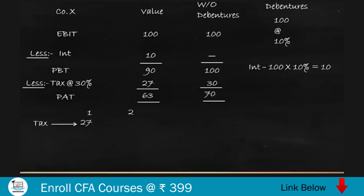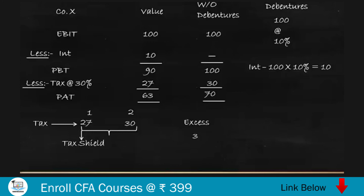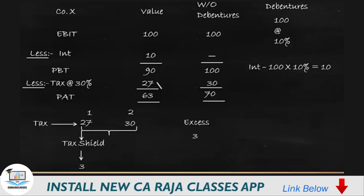In Scenario 2, the profit after tax is 70 and the tax paid is 30. Comparing Scenario 1 and Scenario 2, in Scenario 2 they paid excess tax of 3. This did not happen in Scenario 1 because of the tax shield on interest. The tax shield is 3 — in Scenario 1 the tax paid was 27, in Scenario 2 it was 30, and the difference of 3 is the tax shield earned because of the presence of interest.